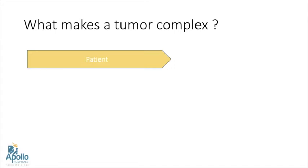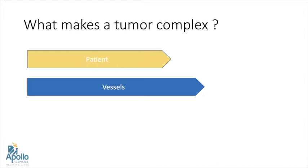Associated comorbidities can also lead to anesthesia-related and surgical-related risk. The second factor is vessels — vascular anatomy plays a very key role, especially in partial nephrectomy. Detailed vascular anatomy is essential. Multiple vessels, early branching, and thick lymphatics around the vessels can all pose problems in dissection.